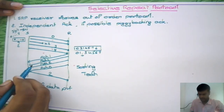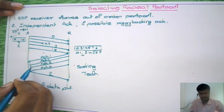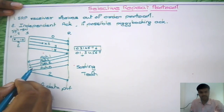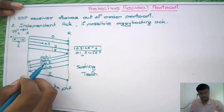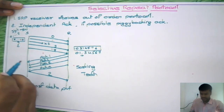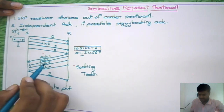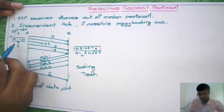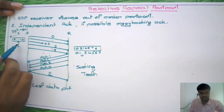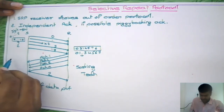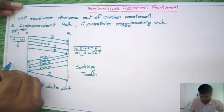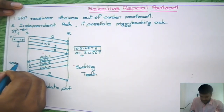On the sender side, whenever it receives a negative acknowledgement, it needs to find that particular packet in the window by its sequence number. This means the sender side requires a searching technique.